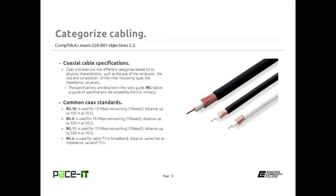The first coax standard is RG58, used for up to 10 megabits per second networking at a distance of up to 185 meters, with an impedance value of 50 ohms. That standard was called 10base2 networking — 10 referring to megabits per second, base standing for baseband, and 2 standing for 200 meters, though it only actually goes up to 185 meters. Then there's RG8, also used for 10 megabits per second networking but with a distance limitation of 500 meters, making it 10base5 networking, also at 50 ohms.